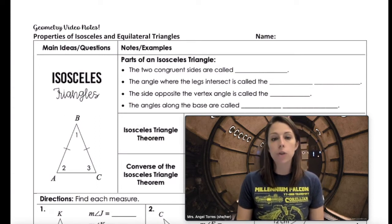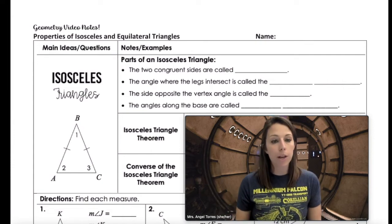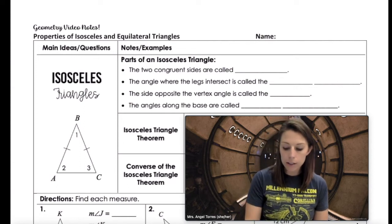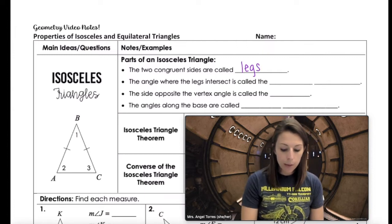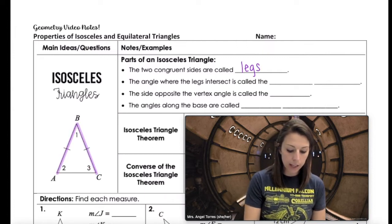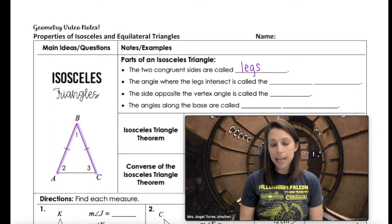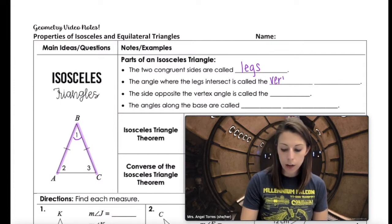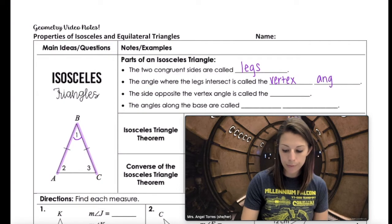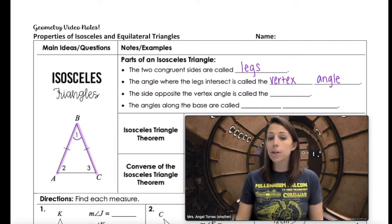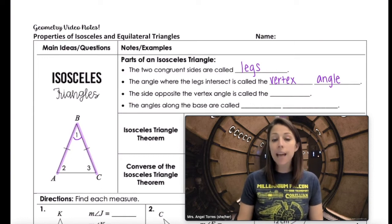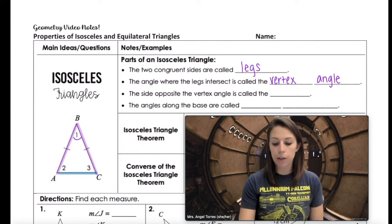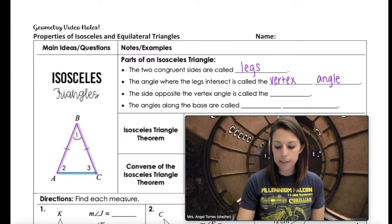What we know about isosceles triangles is that they have two congruent sides. As you can see in the diagram, side AB is congruent to side BC. Those two congruent sides are called the legs. The angle where those legs intersect is called the vertex angle of an isosceles triangle.